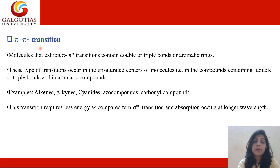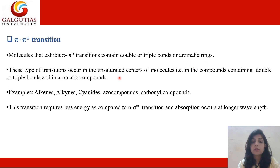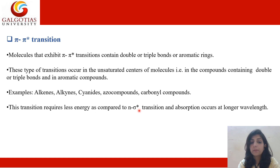Next is the pi to pi star transition, which occurs in unsaturated compounds. Molecules exhibiting pi to pi star transitions contain double or triple bonds or aromatic rings. These transitions occur at the unsaturated center of molecules. Examples include alkenes, alkynes, cyanides, and carbonyl compounds. These transitions require less energy compared to n to sigma star transitions and absorption occurs at longer wavelengths.